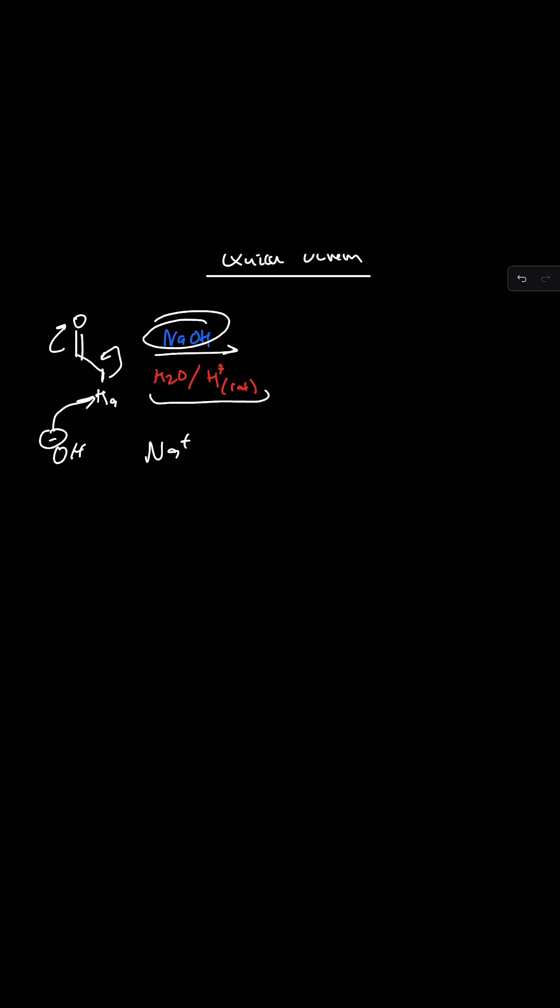We have resonance character here, so we can push the electrons back down from the oxygen and push these electrons on the carbon to make this structure.